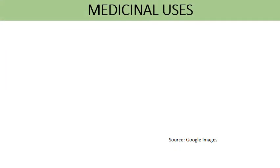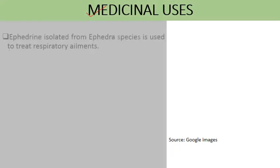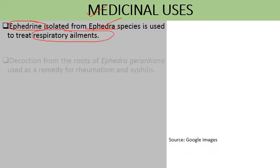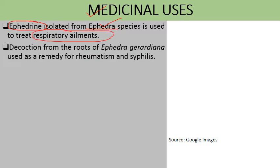Next come medicinal uses. One famous medicine is ephedrine, which is obtained from species of Ephedra and is used for the treatment of respiratory ailments like asthma. A decoction from the roots of Ephedra gerardiana is used as a remedy for rheumatism and syphilis.